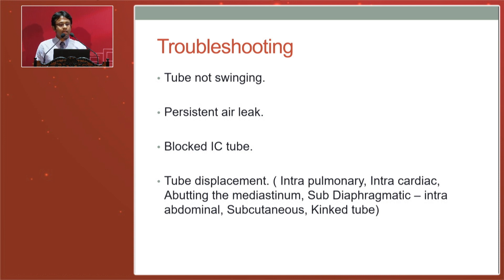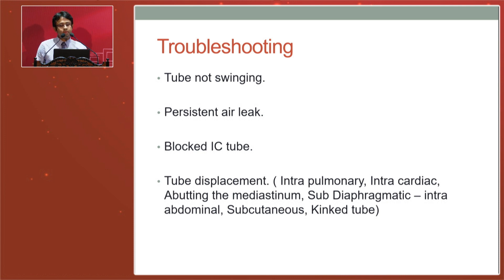In some patients there will be a persistent air leak requiring intervention. Depending on the situation, you may need to apply negative pressure suction to the drain system, or the patient may require surgical intervention for thoracic surgery. If an air leak persists beyond five to seven days, it is better to contact the thoracic surgical team for an opinion. A blocked IC tube is another common problem — you may have to remove and replace it, though sometimes flushing can relieve the blockage. Proper management of the IC tube can avoid this complication.